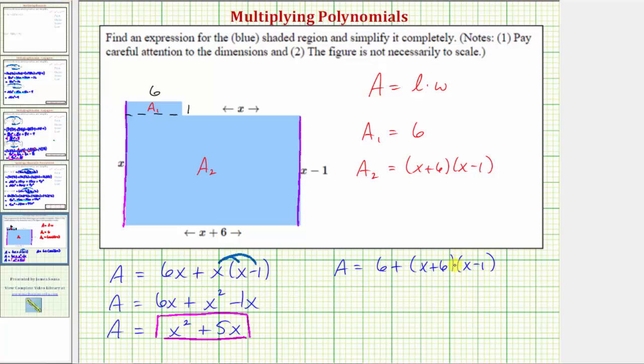Multiplying here we'll have four products: one, two, three, four. So we have the area is equal to six plus x times x is x squared, plus x times negative one, that's negative x, so we have minus x. And now we distribute six, six times x is six x, plus six times negative one is negative six, so we have minus six.